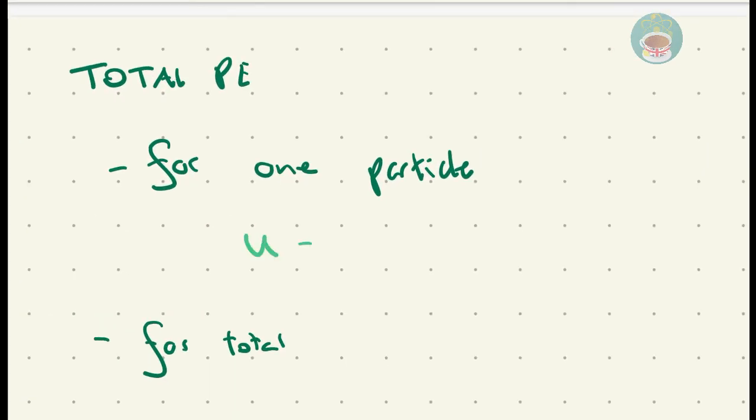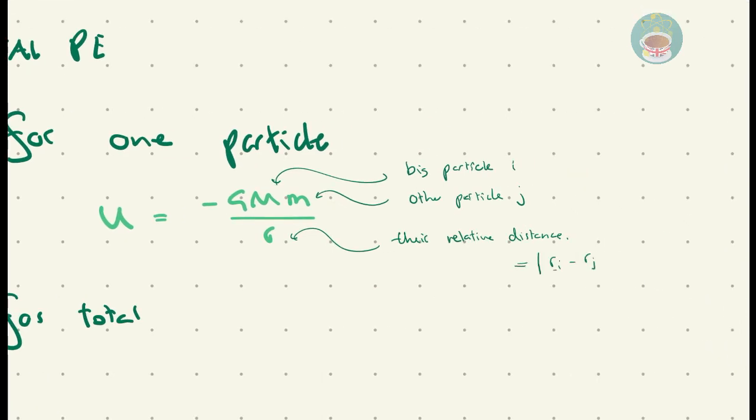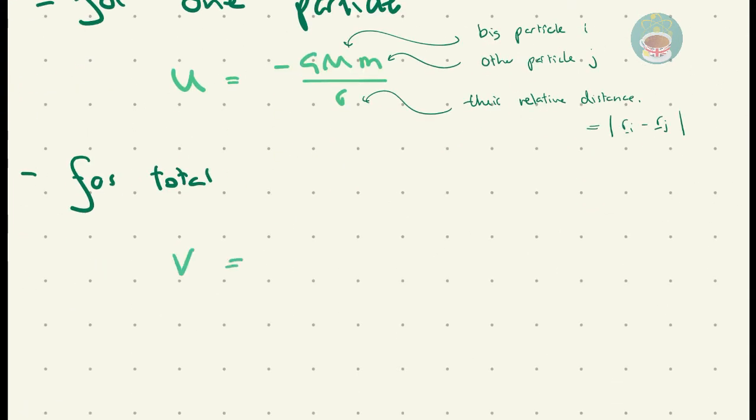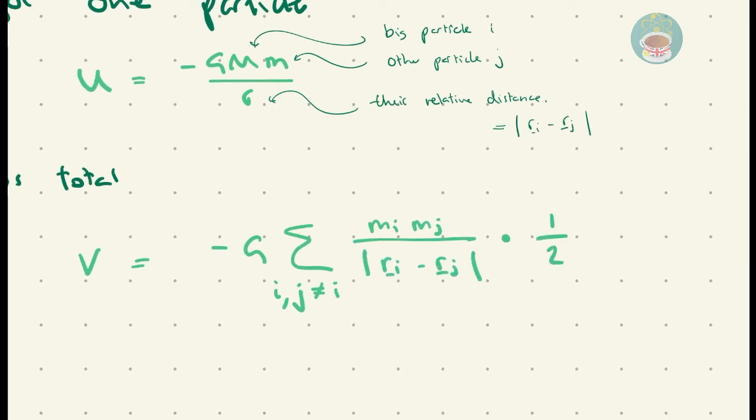Likewise, for the potential energy, from formula U equals minus GMM over r, we can say that the total potential energy of the system is all of that summed over the magnitude of the distance between them, but this makes us count each potential energy twice, so we divide this ultimately by 2.